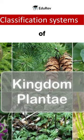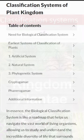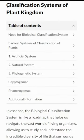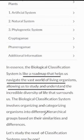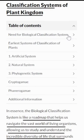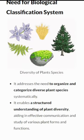Today, in this video on the topic Classification Systems of Plant Kingdom, we will learn about how we sort and organize plants. Think of classification systems of the plant kingdom like a map guiding us through the big world of living things, kind of like a GPS helping us understand all the different types of life on Earth. So, let's dive right in and explore the need for a biological classification system.